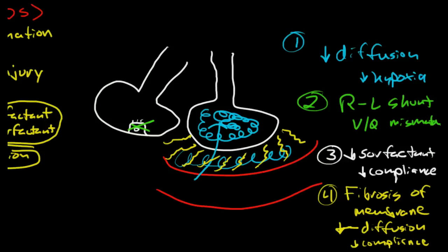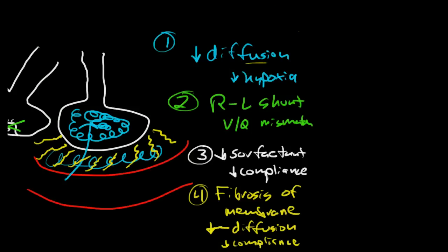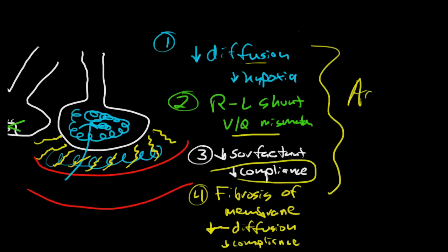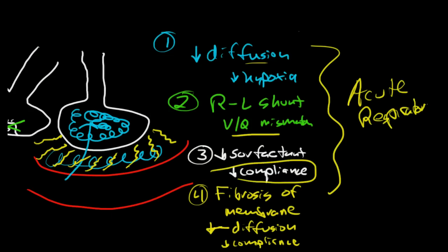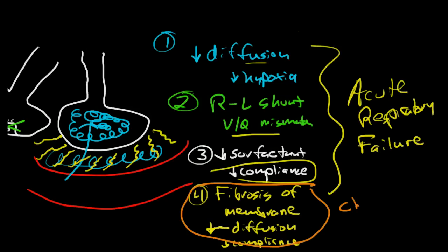Now all of these things, acutely the diffusion, the VQ mismatch, and the decreased compliance are going to cause acute respiratory failure. And this usually lasts for a number of days, and then this acute stuff is going to start to get better, but there is going to be permanent injury because of this fibrosis, and this is going to cause chronic respiratory problems.